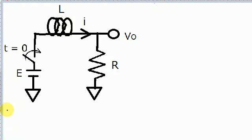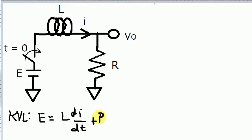Let's write a KVL equation to start off with. We have E equals the voltage across that inductor, which would be L dI/dt plus R times I.